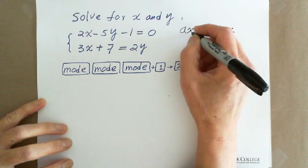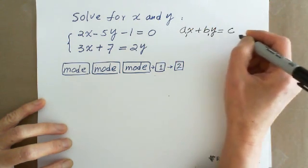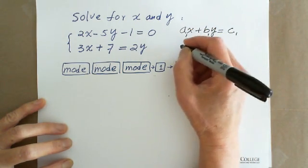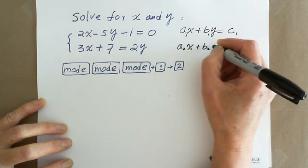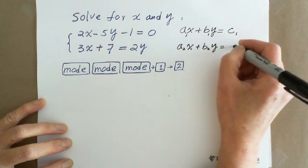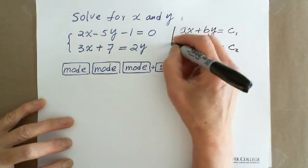You have two equations, so A1X plus B1Y equals C1, and the second one is A2X plus B2Y equals C2. This is standard form.